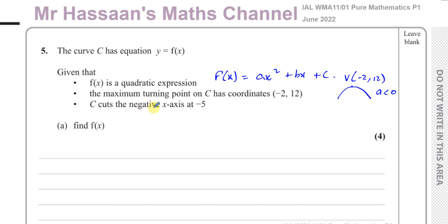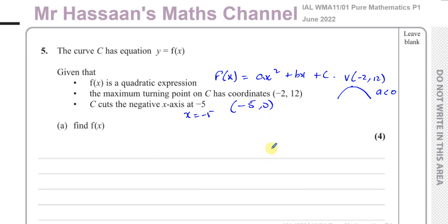Then it says C cuts the negative x-axis at negative 5. That means one of the roots of this equation is x equals negative 5 — that's one of the x-intercepts. With this information, we can actually find the equation of the curve, which we're asked to find — find f of x — in two ways.